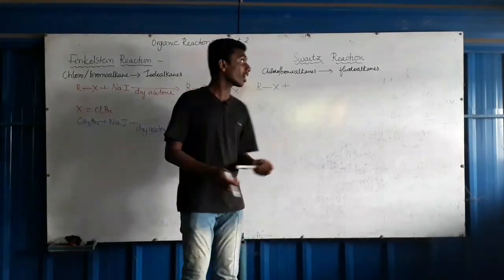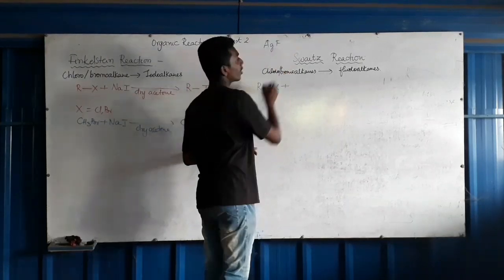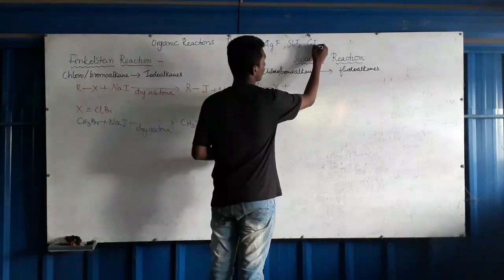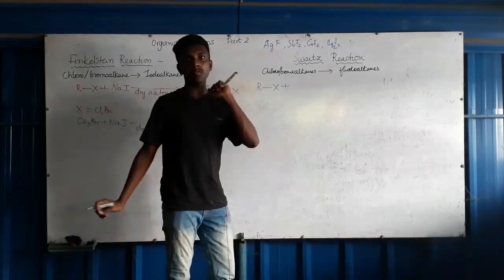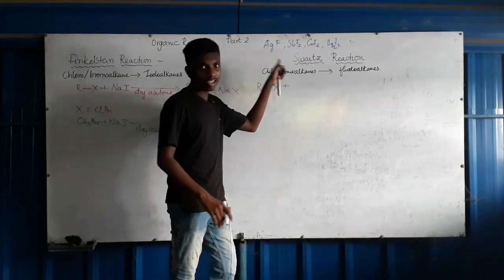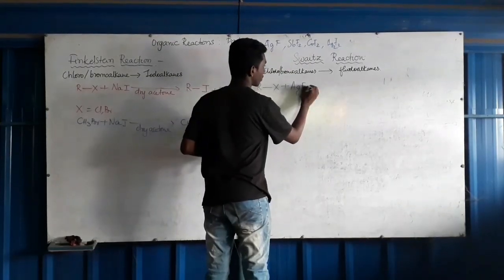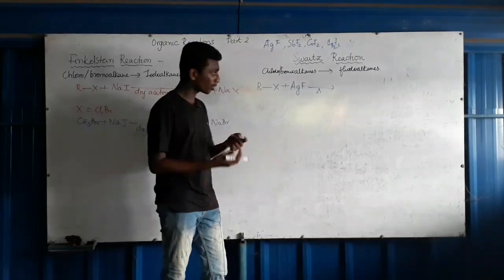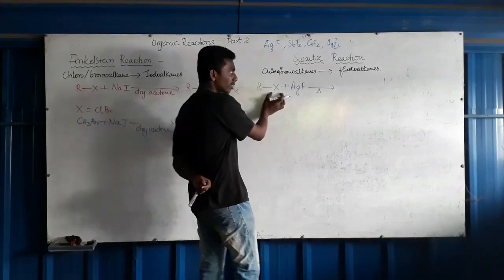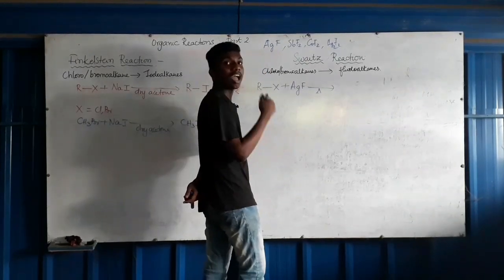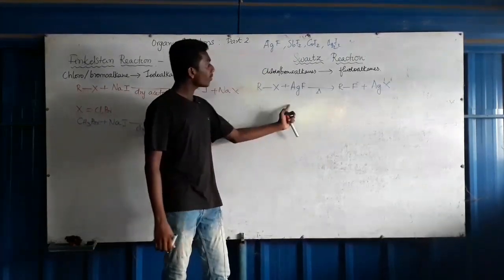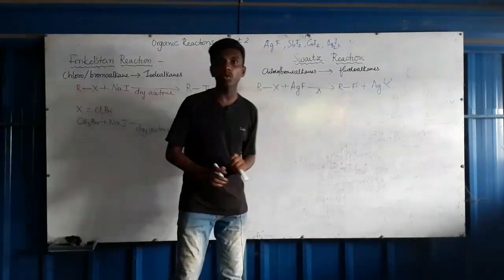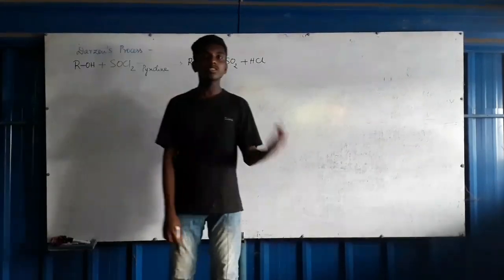The metallic fluorides used in the Swarts Reaction are: silver fluoride (AgF), antimony fluoride (SbF3), cobalt fluoride (CoF2), and mercury fluoride (Hg2F2). The equation is: RX + metallic fluoride (e.g., AgF, CoF2, SbF3, or Hg2F2) with heat → RF (alkyl fluoride) + the corresponding metallic halide.